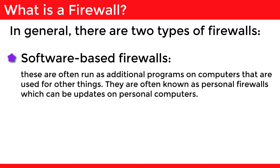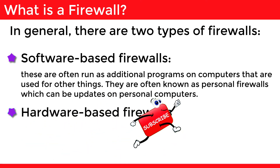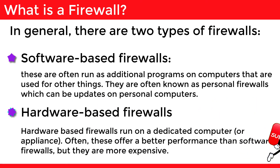In general, there are two types of firewalls. Software-based firewalls are often run as additional programs on computers that are used for other things. They are also often known as personal firewalls, which can be installed on personal computers. Hardware-based firewalls run on a dedicated computer or appliance. Often these offer better performance than software firewalls, but they are more expensive.